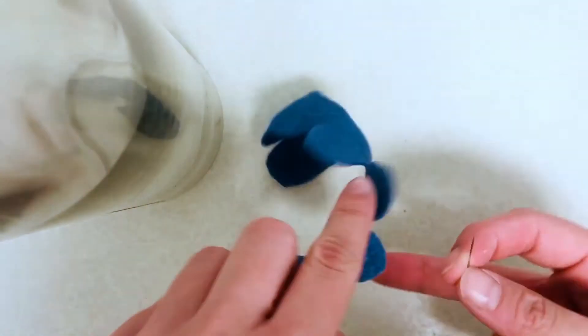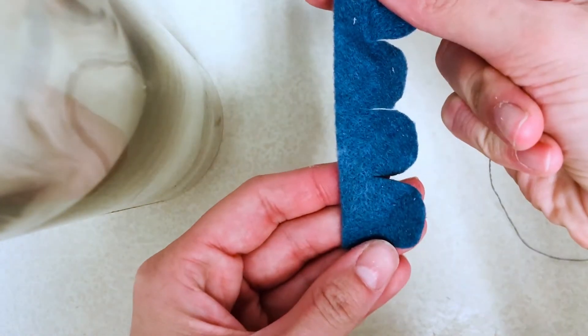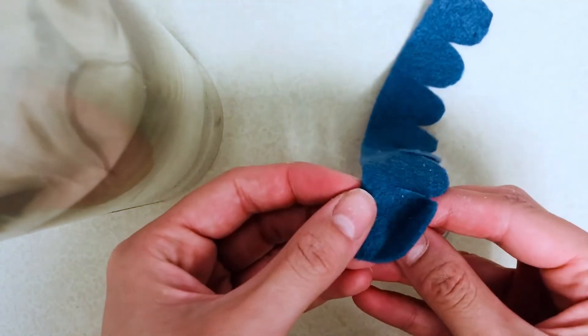You're going to want to begin your stitching by starting at the very bottom of the second petal shape that you cut out, approximately one inch from the end of your felt strip.